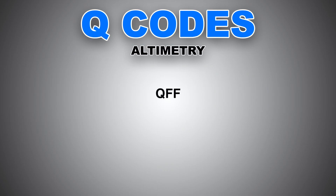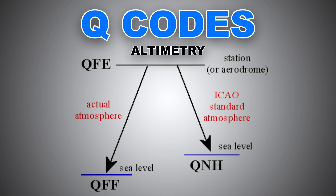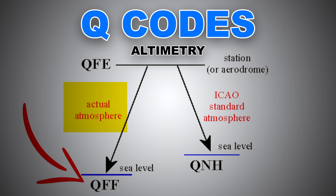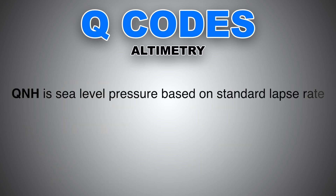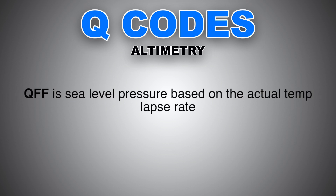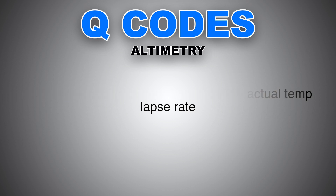The last altimetry code is QFF. QFF is not used in aviation — it is rather used by meteorologists. The QFE, if reduced to mean sea level using standard atmospheric values, gives us QNH. However, if we reduce the QFE using the actual atmospheric conditions and temperature lapse rates, we obtain QFF. Put simply: QNH is sea level pressure based on the standard lapse rate, while QFF is the actual sea level pressure based on actual lapse rates. Don't focus too much on QFF, as it is not used in aviation and you'll probably never hear about it.